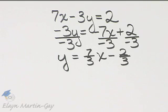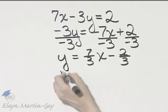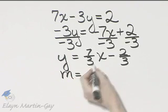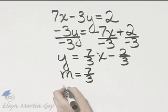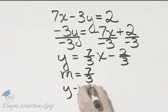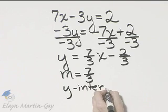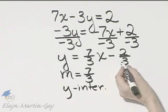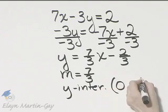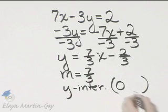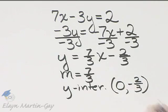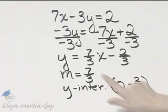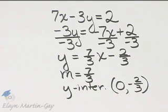It is now in slope-intercept form. The coefficient of x is always the slope. The slope is 7 thirds. And what is the y-intercept? The y-intercept, this will always be the y-value of the y-intercept. So it's 0, negative 2 thirds. There's your slope, there's your y-intercept, that point.